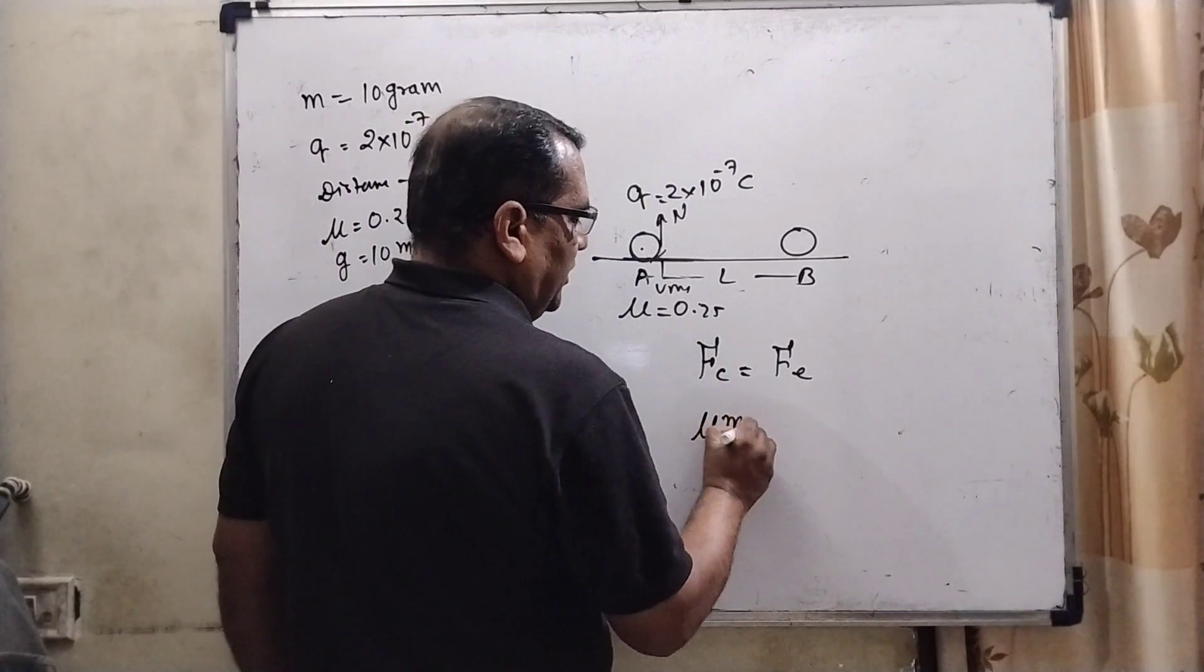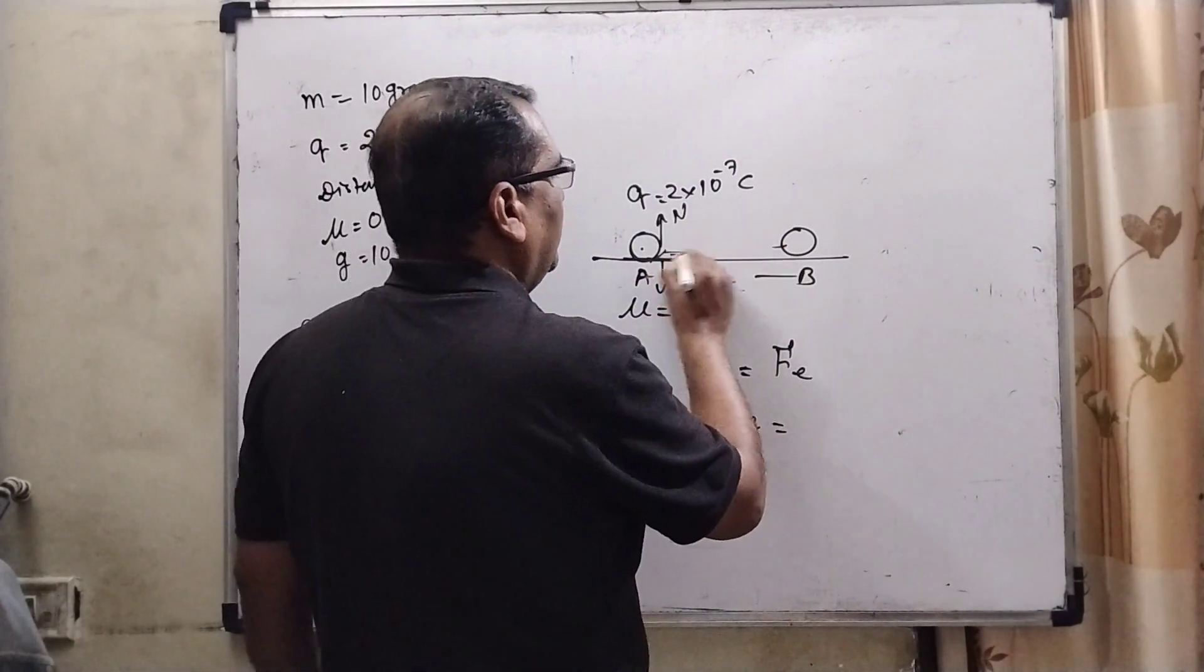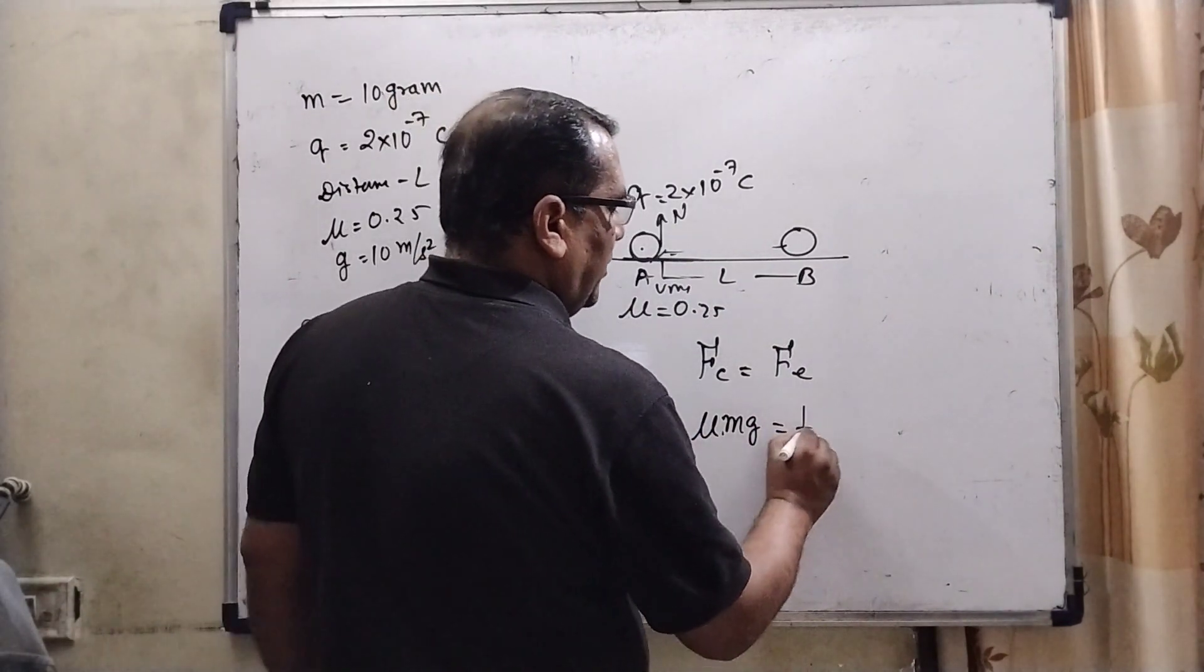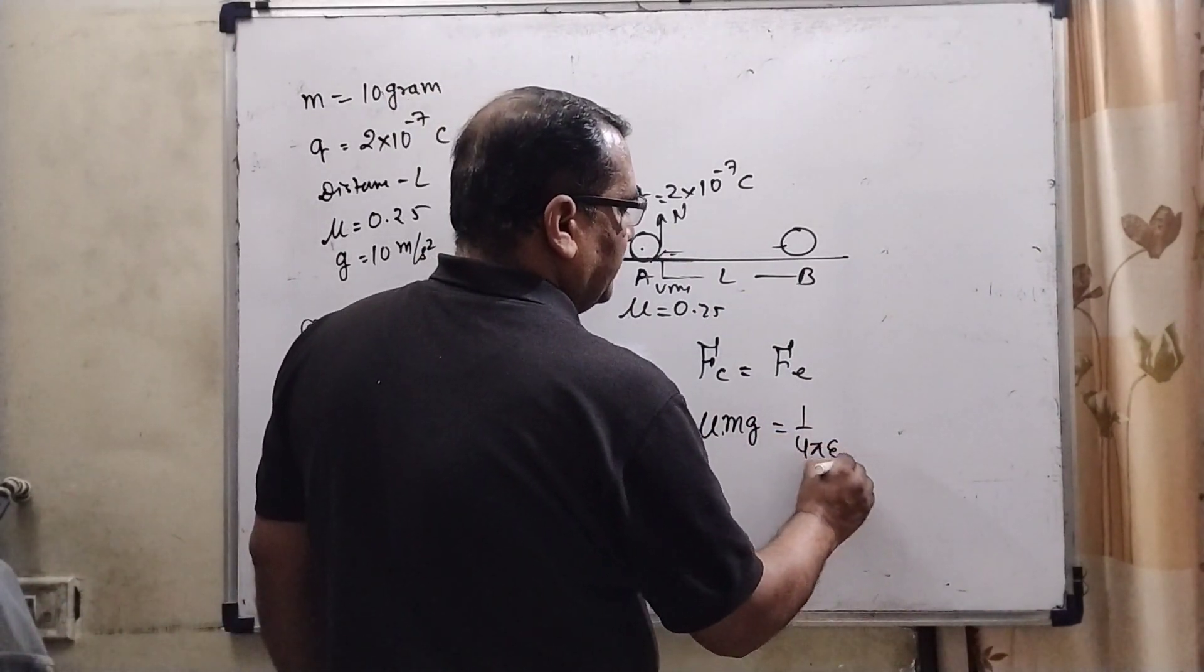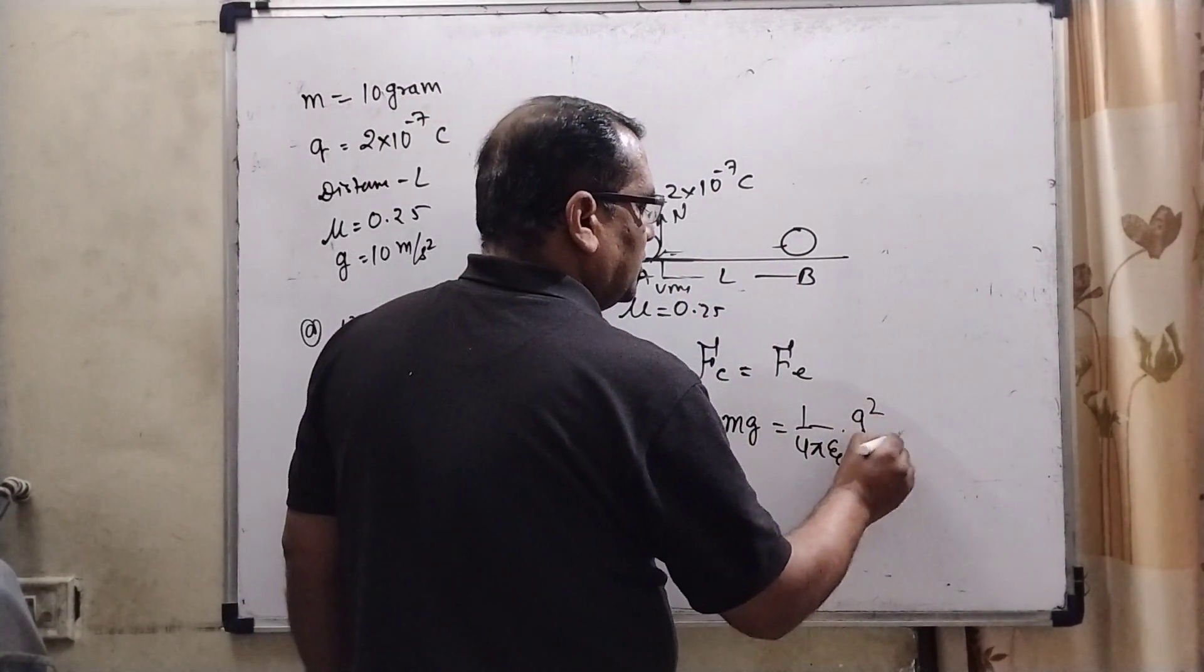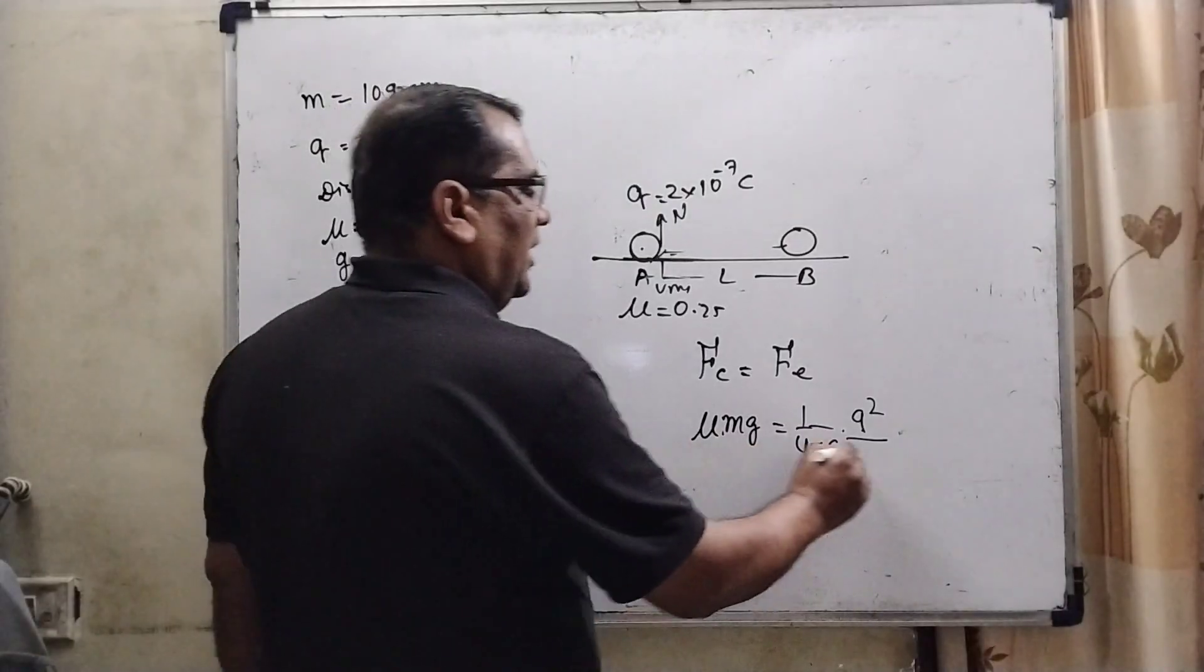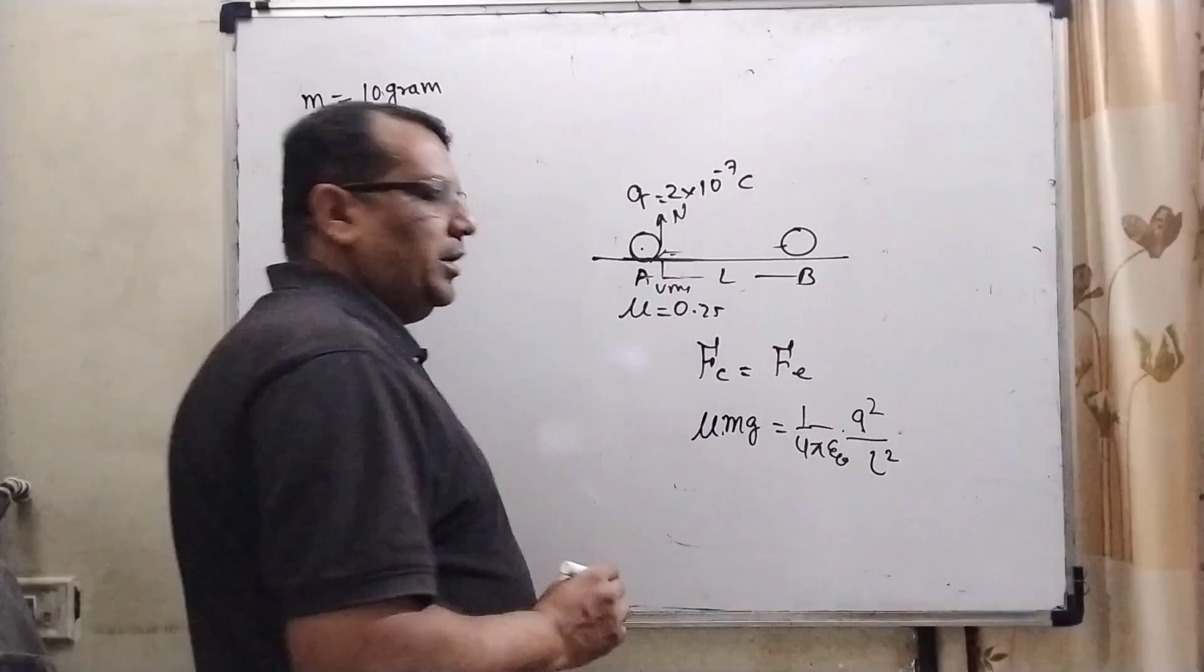So, μmg equals the electrostatic force between both charges, that is (1/4πε₀) × Q². Here both charges are same, so it can be written as Q². And the distance between both charges is L².